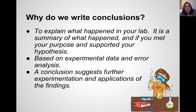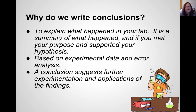So why do we write conclusions? You need to explain what happened in your lab. A lab conclusion is a summary of what happened, and you also describe if you met your purpose and if you supported or maybe refuted your hypothesis. A lab conclusion is based on your experimental data and observations. It's also an error analysis, because not all labs go perfectly — it's very hard to have a controlled lab without any errors. And a conclusion suggests further experimentation and applications of your findings.